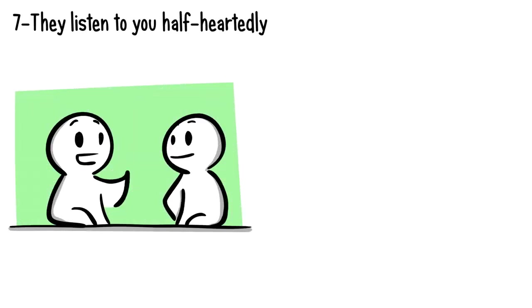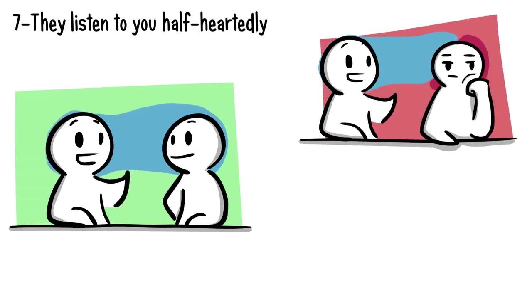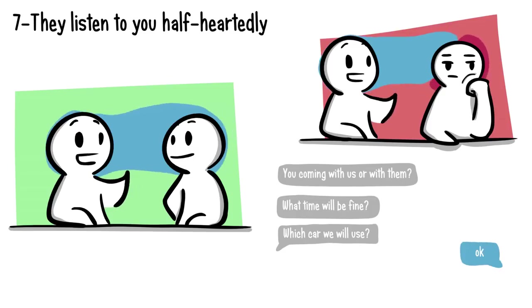Number seven: They listen to you half-heartedly. When we care about someone, we usually do our best to listen to what they say. But if someone is only listening to half of your story and zones out for the rest of it, it's clear they just aren't that invested in you. Other indicators include scanning over your messages instead of fully reading them, giving you only half the answers you need.